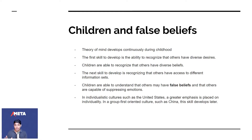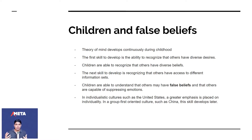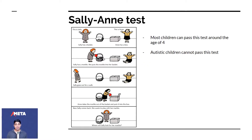This idea of theory of mind — that other people can have false beliefs — actually develops in Chinese children much later than it develops in American children, because China is a more group-oriented society. The best way to test whether a child knows about false beliefs is to give it the Sally-Annie test.